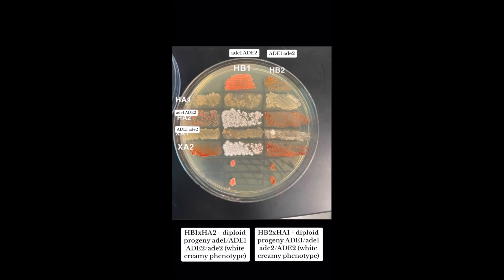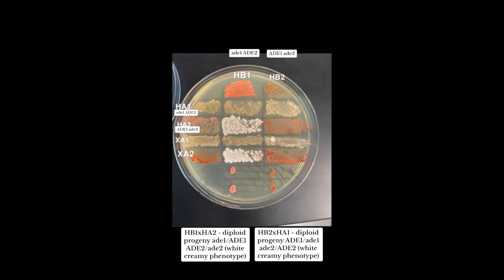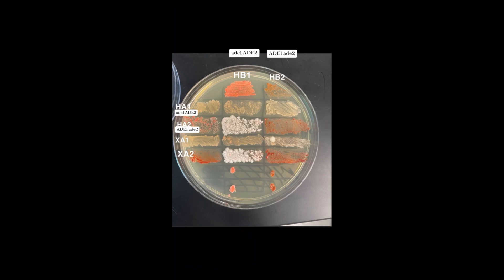They are therefore located on different genes, which is what we see in crosses between Hb1 and Ha2, as well as Hb2 and Ha1. Mutations that fail to complement each other resulted in diploid progeny that still expressed the mutant phenotype. We can see this being the case when we crossed Hb1 with Ha1 and when we crossed Hb2 with Ha2.